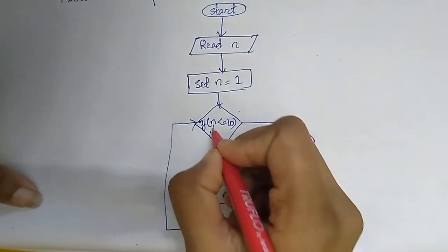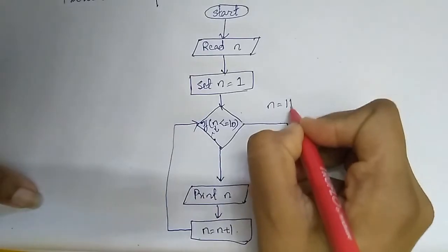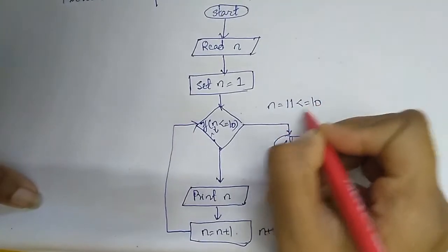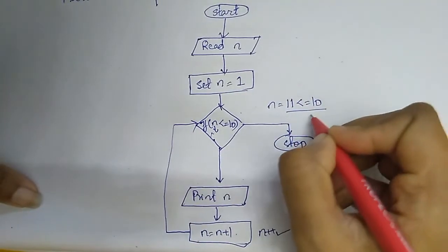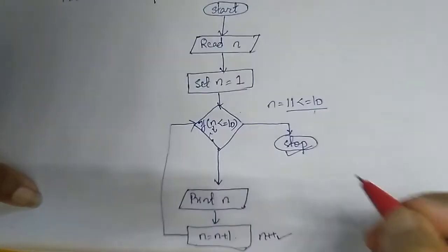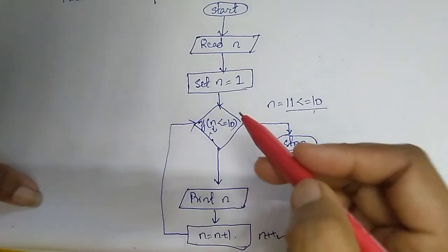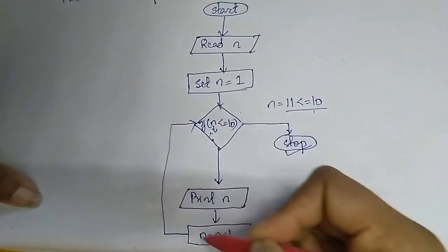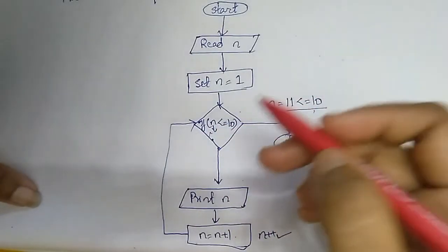And when this value will not meet the condition, when n will be equal to 11, it will not meet the condition and hence it will end the loop. So this is the concept of loop to repeat a process a certain number of times.